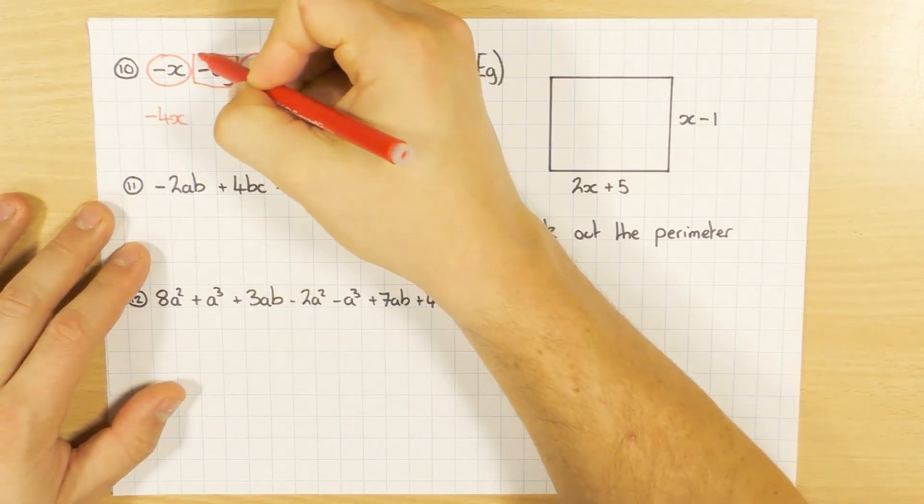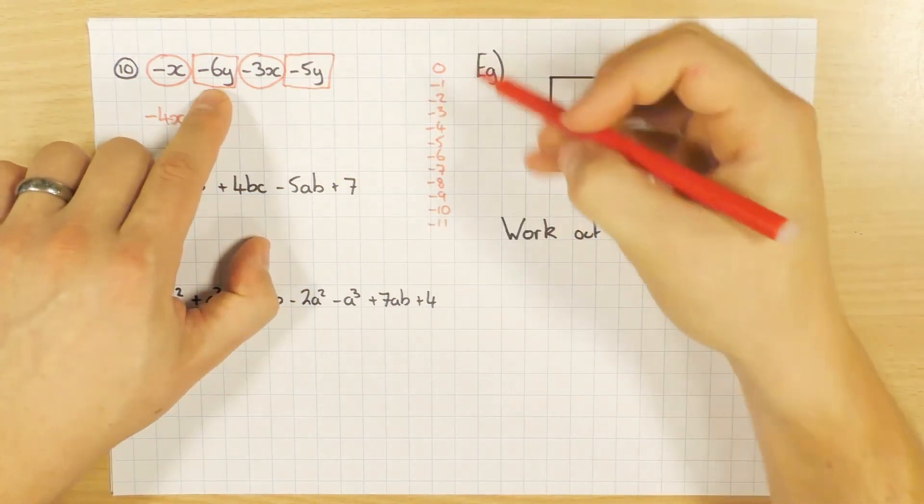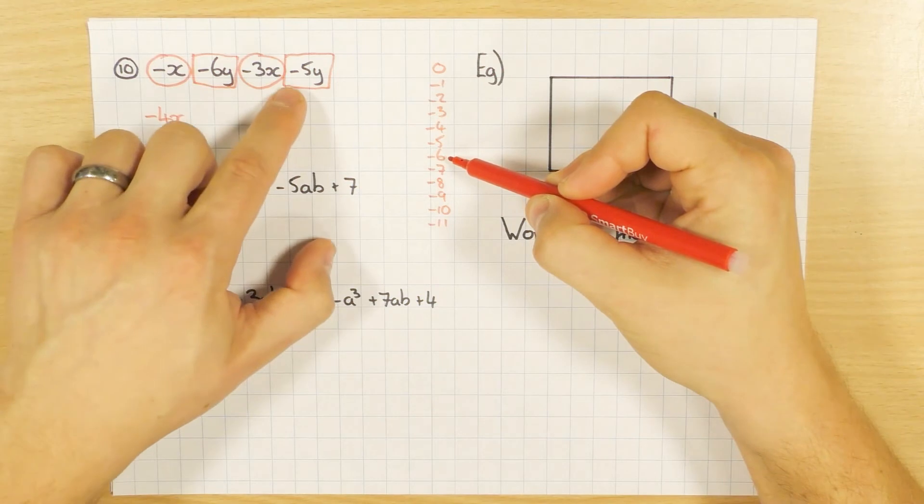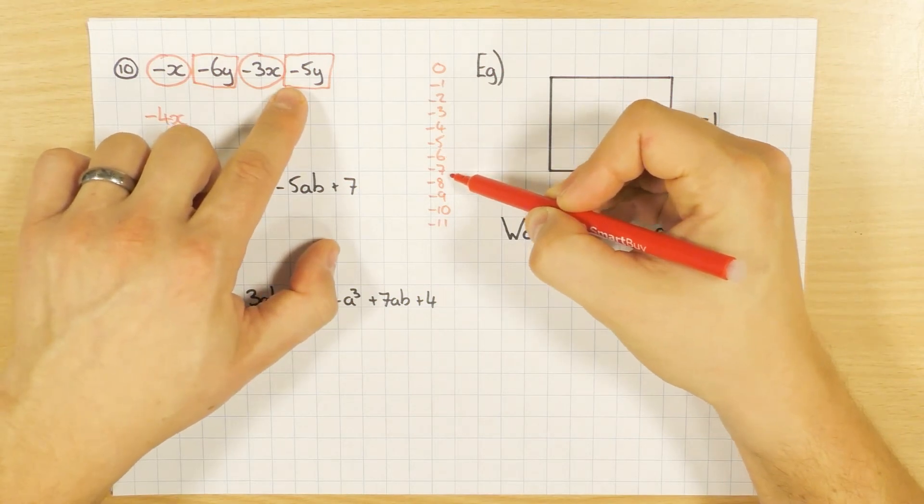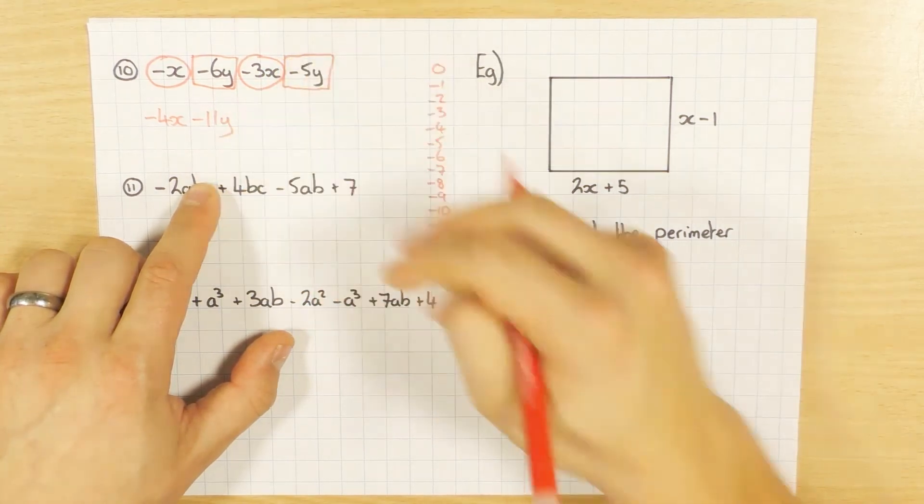Now let's have a look at the Ys. So first one's minus 6. I'm starting at minus 6. And I take away 5. 1, 2, 3, 4, 5. I'm on minus 11Y. And we're done.